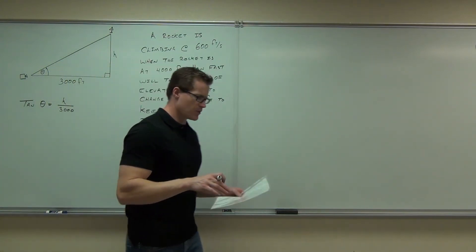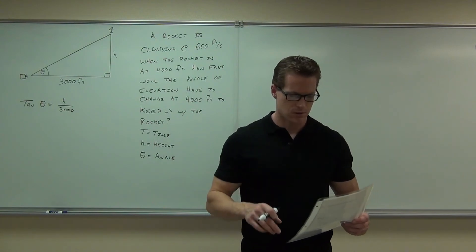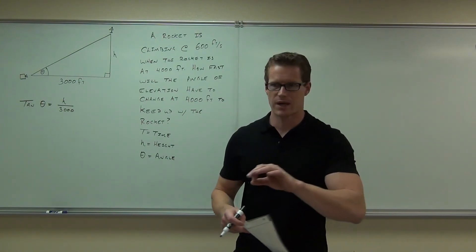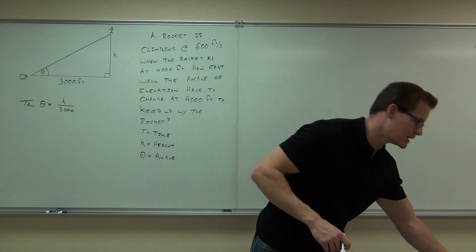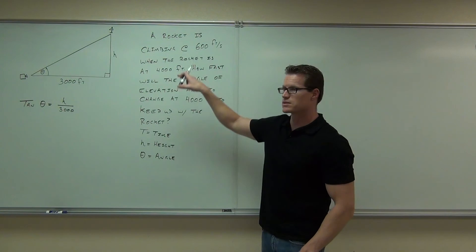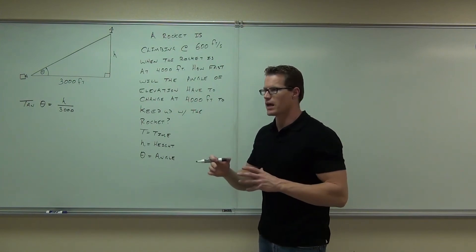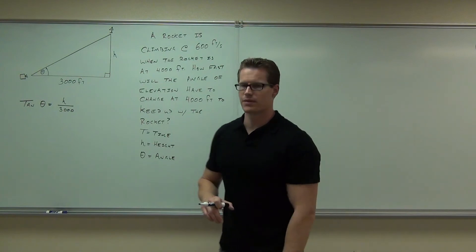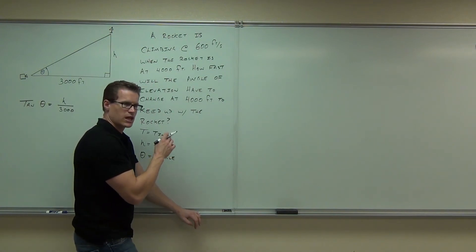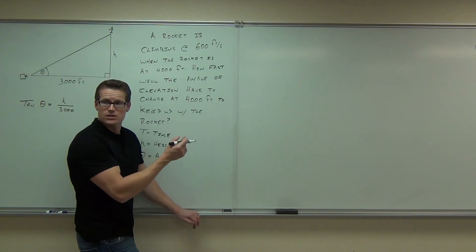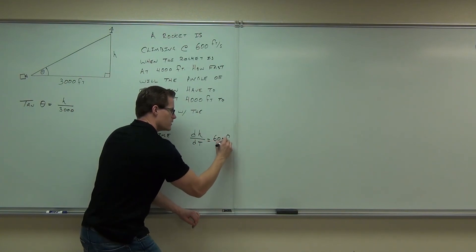Now the next thing after we assign our letters and we made our formula — what did we do? We identified any rates of change. So let's identify any rates of change that we have. 600 feet per second — that's a rate of change. What is changing at 600 feet per second? Is it the angle, the height, or the time? The height. Here's how you write that: if your height is changing with respect to time at 600 feet per second, what is that? dH/dt. This is the change in height with respect to time, and you know that's 600 feet per second.